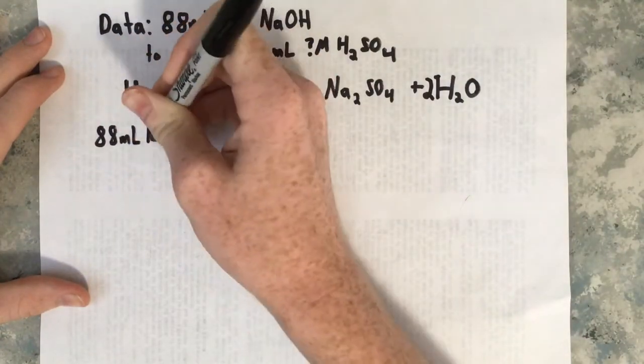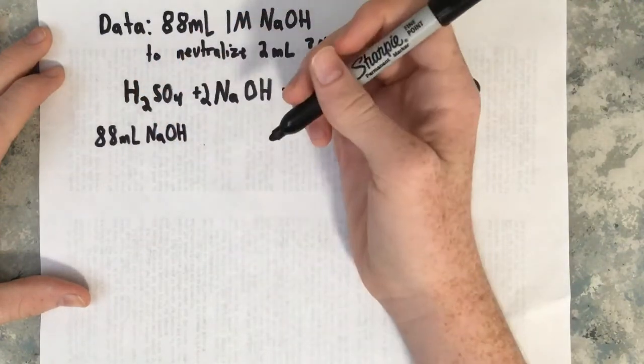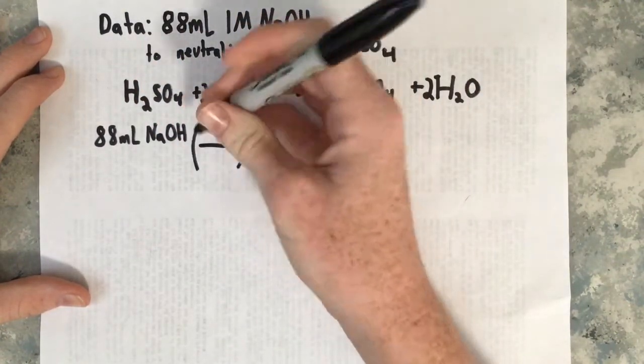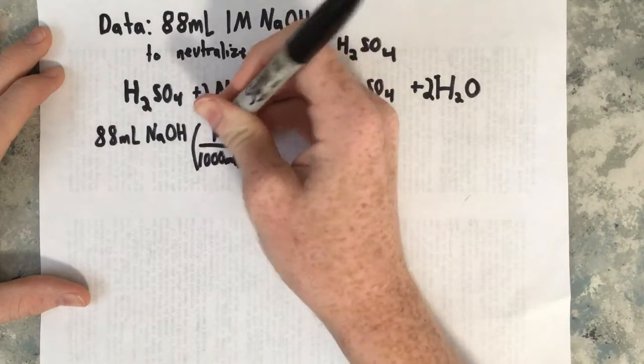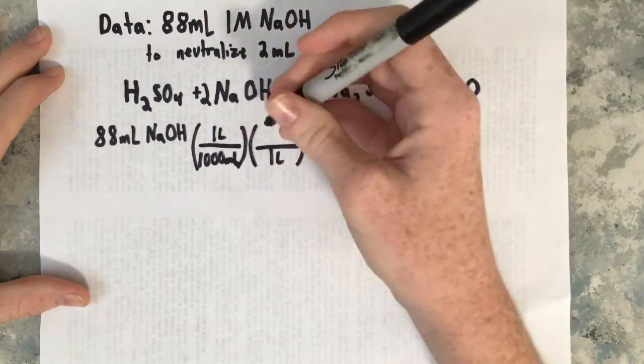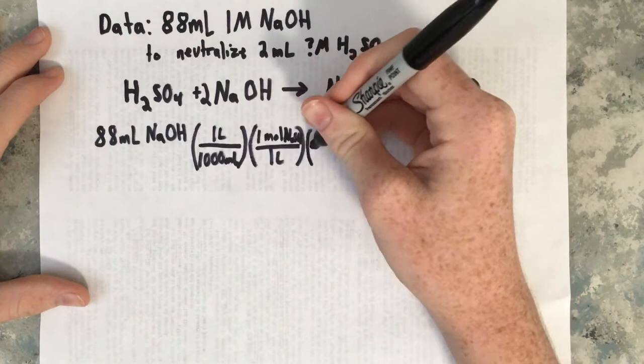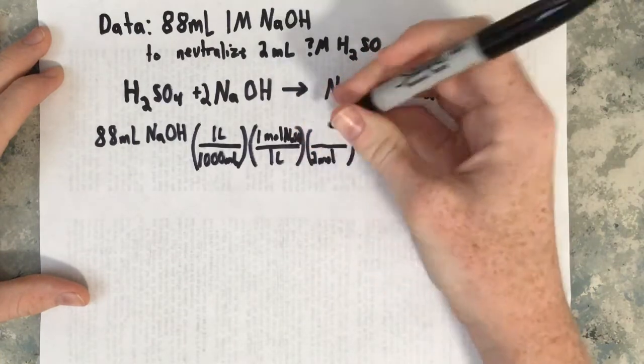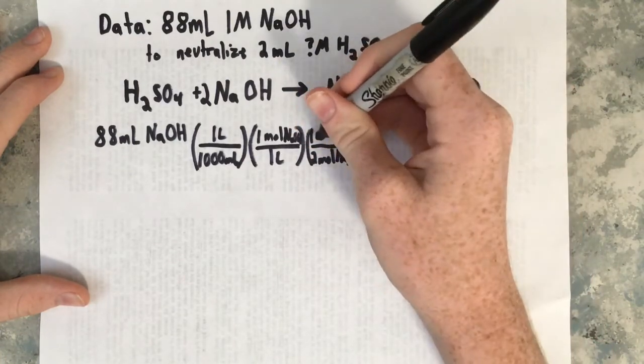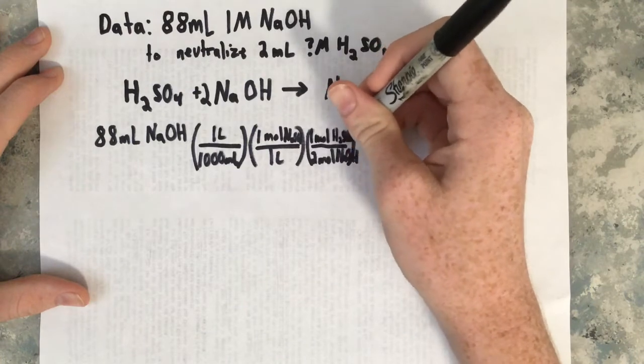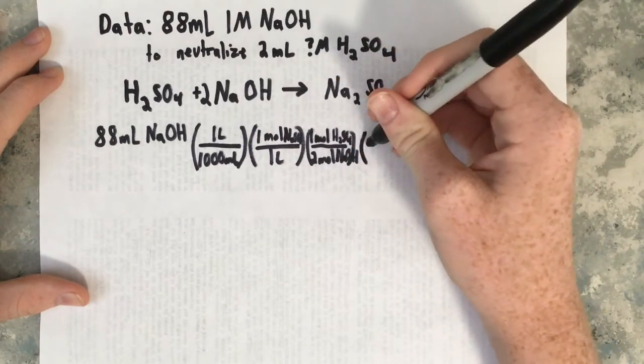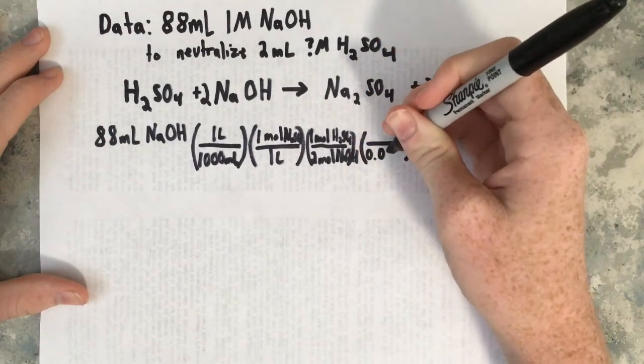So we start with what we know: 88 milliliters of sodium hydroxide. We turn the milliliters into liters, then use the conversion of the concentration of sodium hydroxide in one liter, then the molar ratio in the reaction between sodium hydroxide and sulfuric acid, and put it over the final volume of sulfuric acid. We get moles over liters of sulfuric acid.